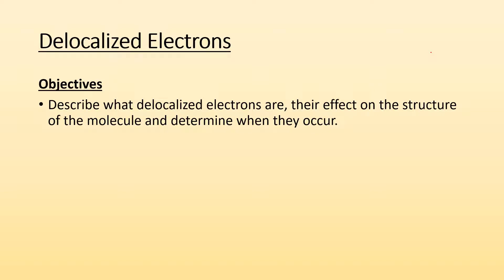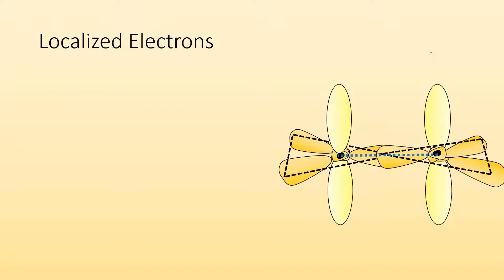How's it going, ladies and gentlemen? Mr. Doniu here again. This time we're going to take a look at delocalized electrons. Our objectives will be to describe what delocalized electrons are, their effect on the structure of the molecule, and determine when they occur. So let's take a look.